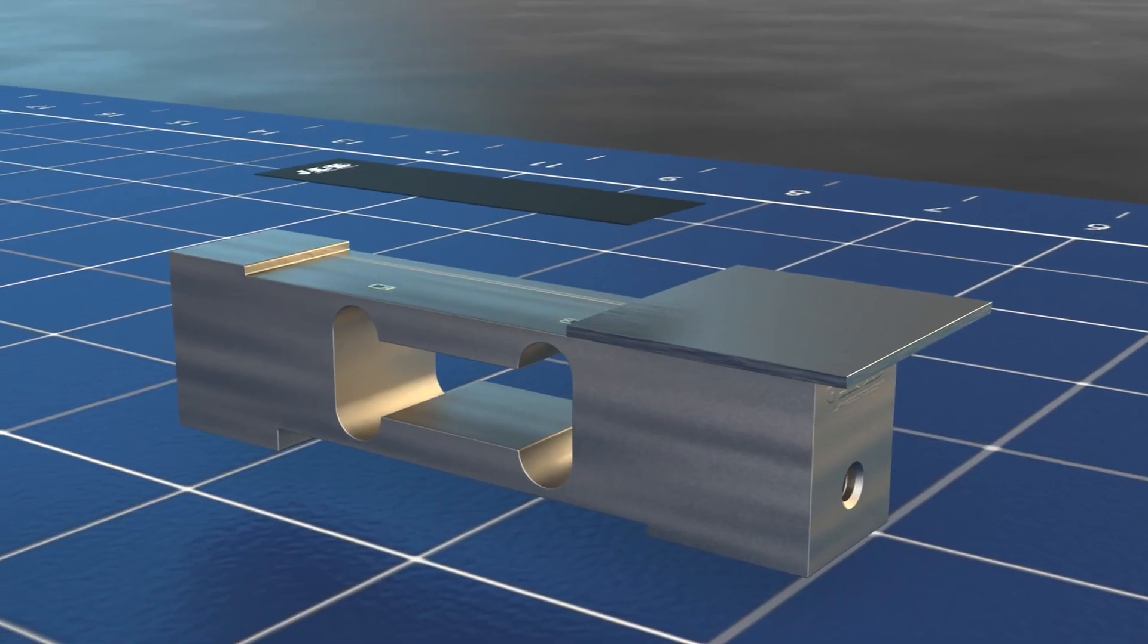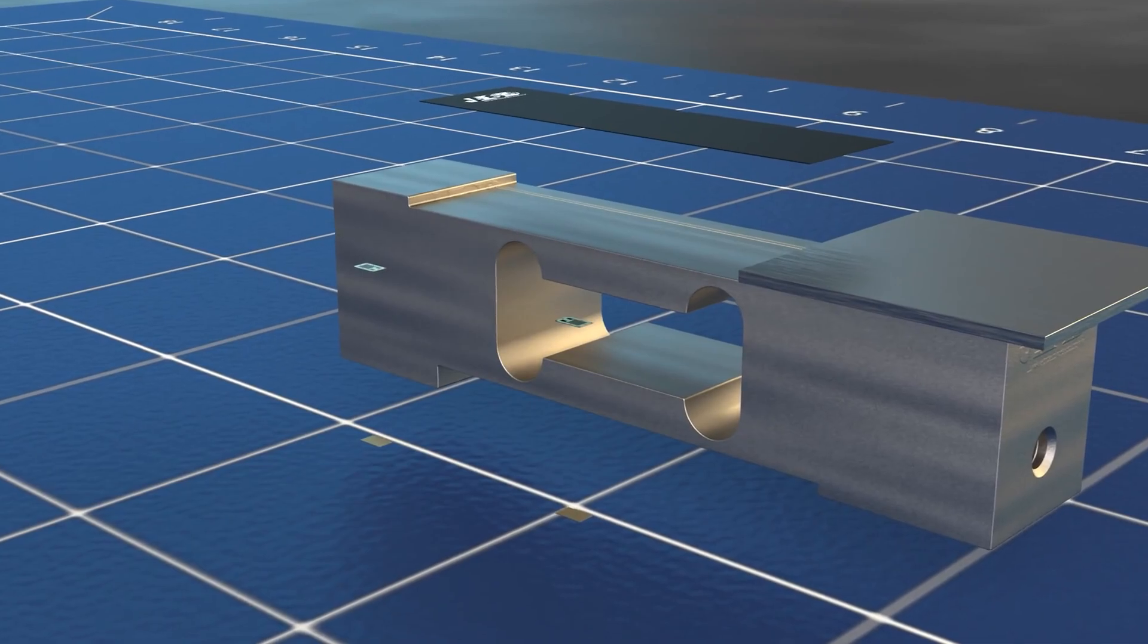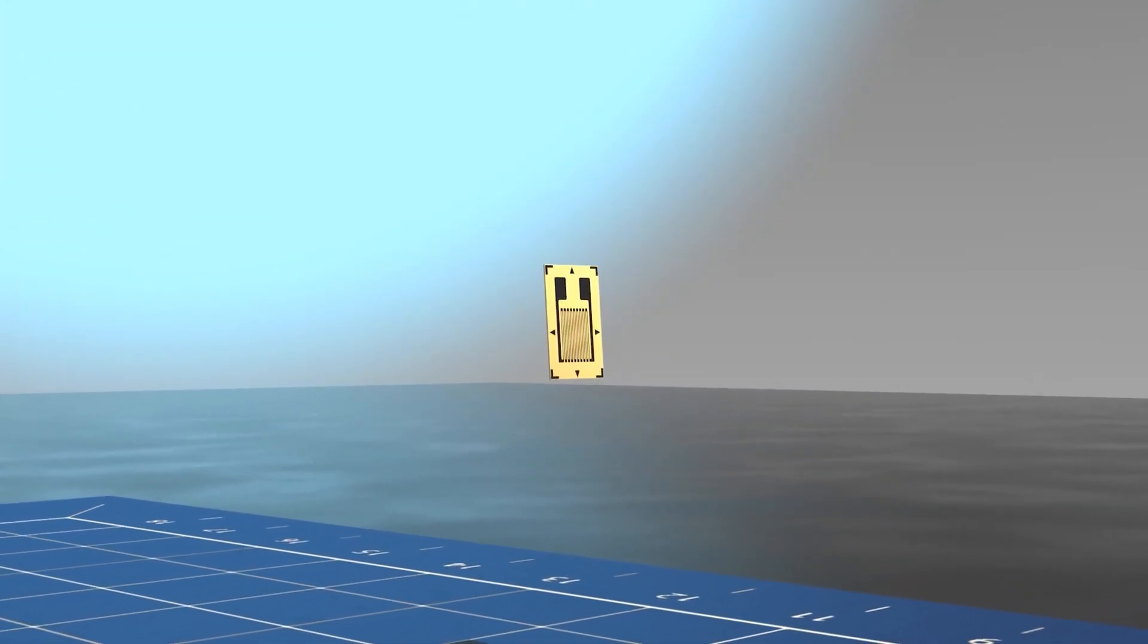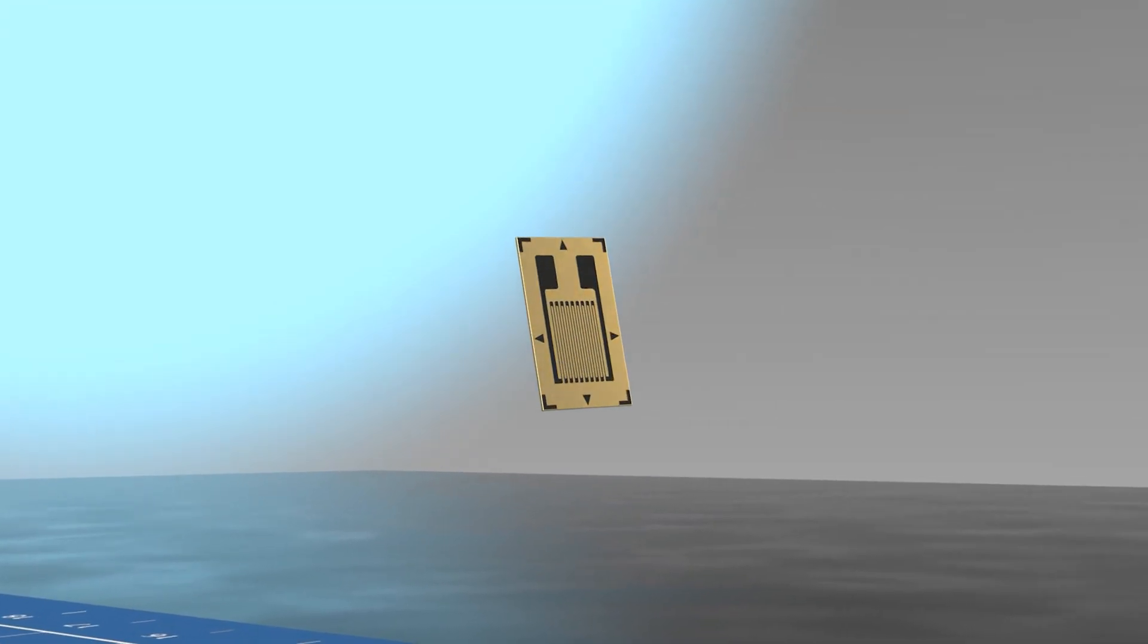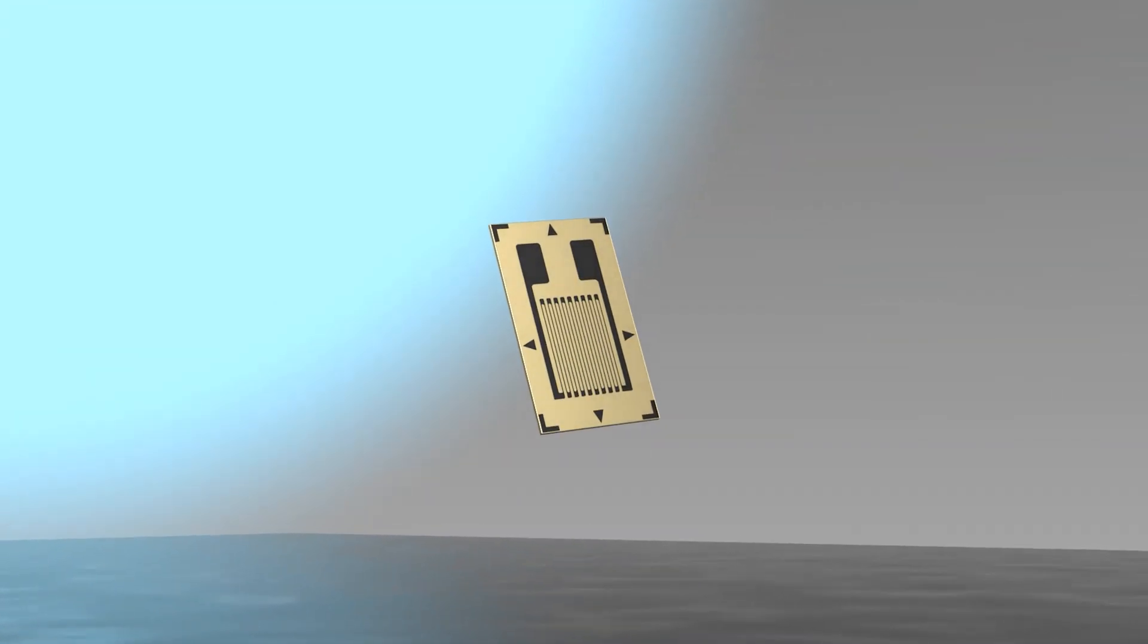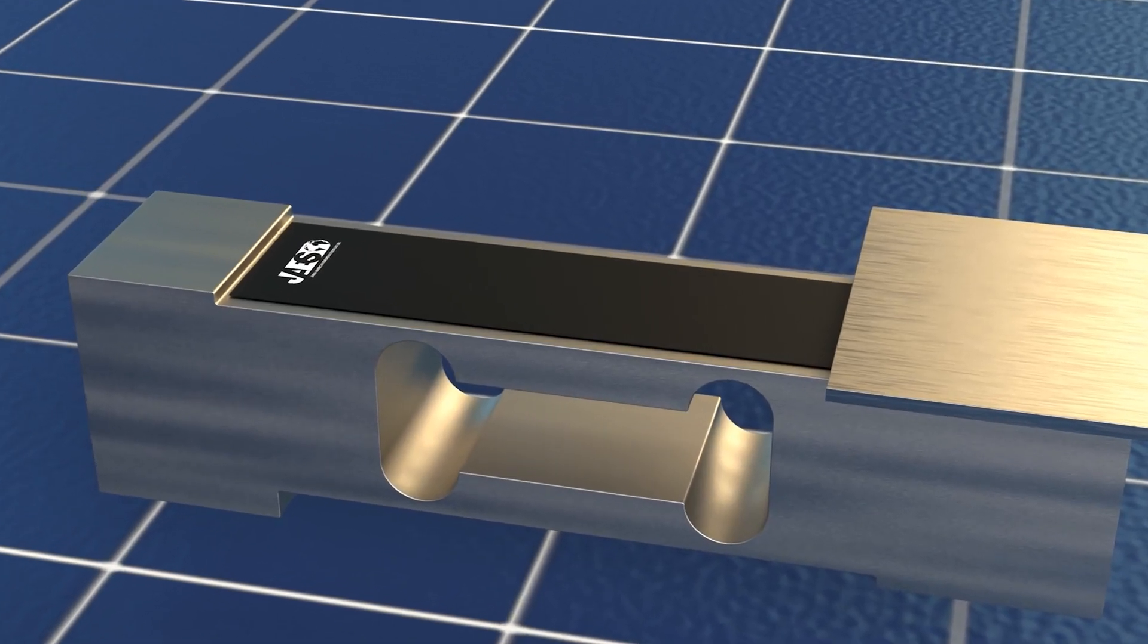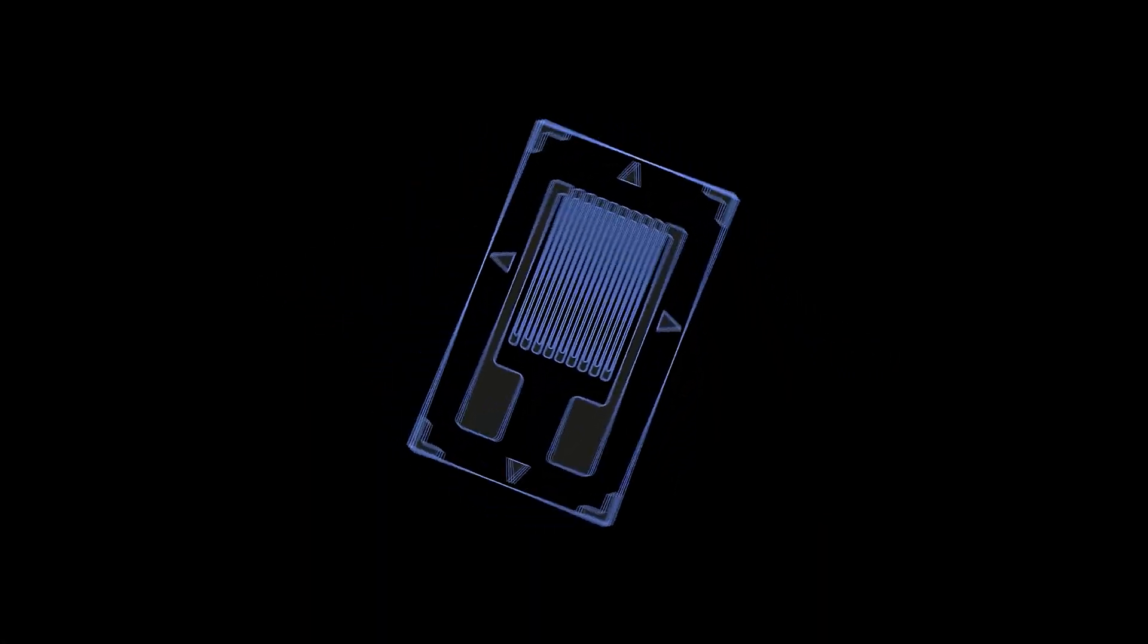The strain gauge load cell is made of four extensometers. The extensometer is a measuring instrument which detects small deformations of a body subjected to mechanical stress. Extensometers inside the cell are in a Wheatstone bridge configuration.